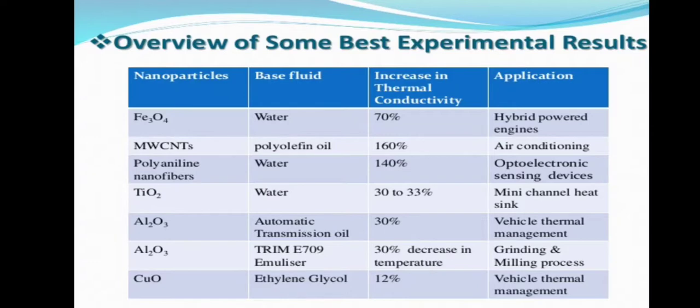Now let me tell you about the topmost nanoparticles used, which is MWCNTs, which is used with poly-alpha-olefin oil and which gives us an increase in thermal conductivity to a whopping 160 percentage, and it is mainly used in air conditioning. Then we have polyaniline nanofibers, which if we use with water gives 140 percent increase in thermal conductivity, and it is obviously used in optoelectronic sensing devices.